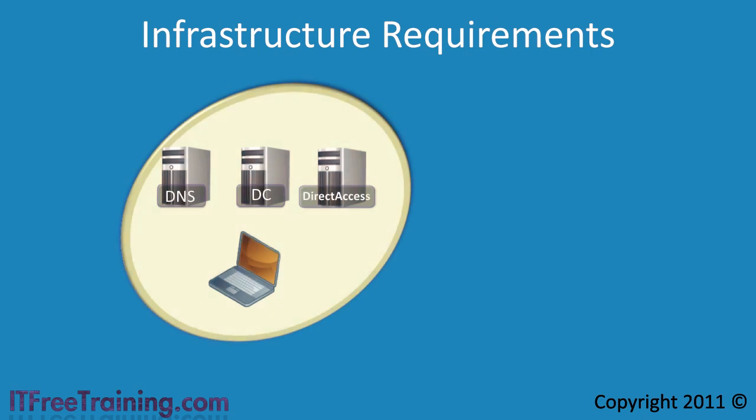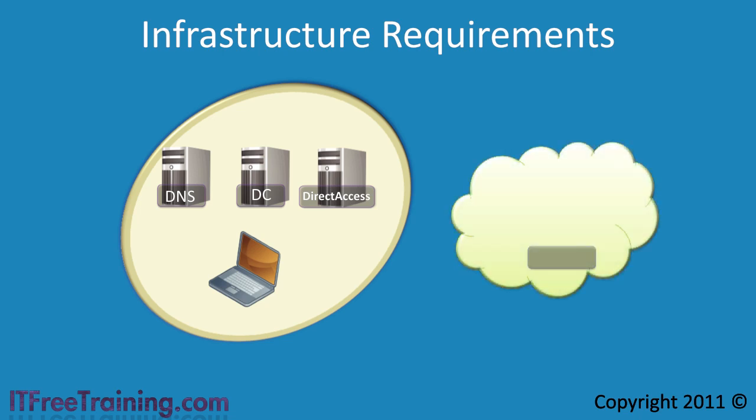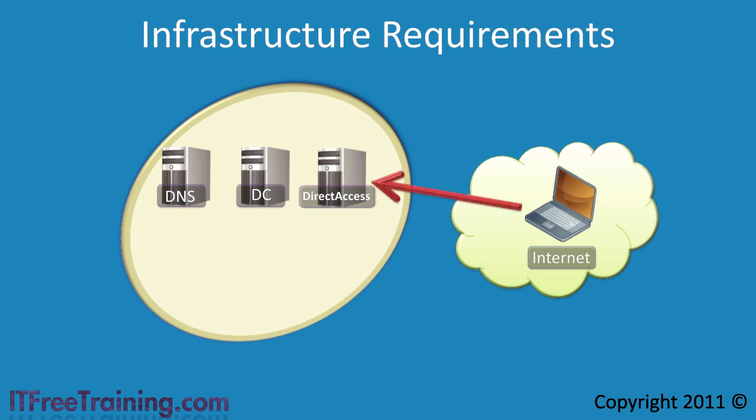When your computer starts up it checks to see if it is connected to the corporate network by trying to connect up to company resources like a DNS server. If it is directly connected to the corporate network this will succeed. If the computer is moved out of the corporate network and connected to the internet, it will no longer be able to access the company's servers directly, and will automatically attempt to connect to the corporate network using direct access.